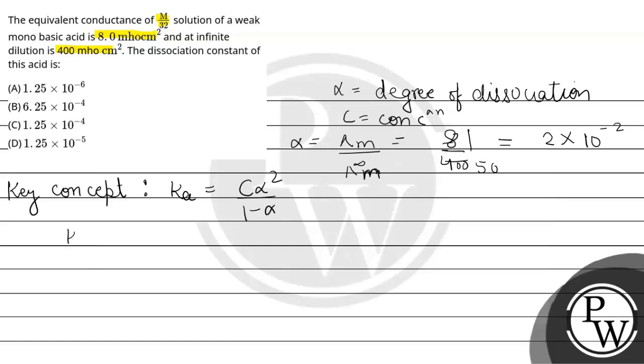Now let's calculate Ka. C is M/32, so it's 1/32 times alpha square, which is (2 × 10^-2)², upon 1 minus alpha. As alpha is very small, we are neglecting it.